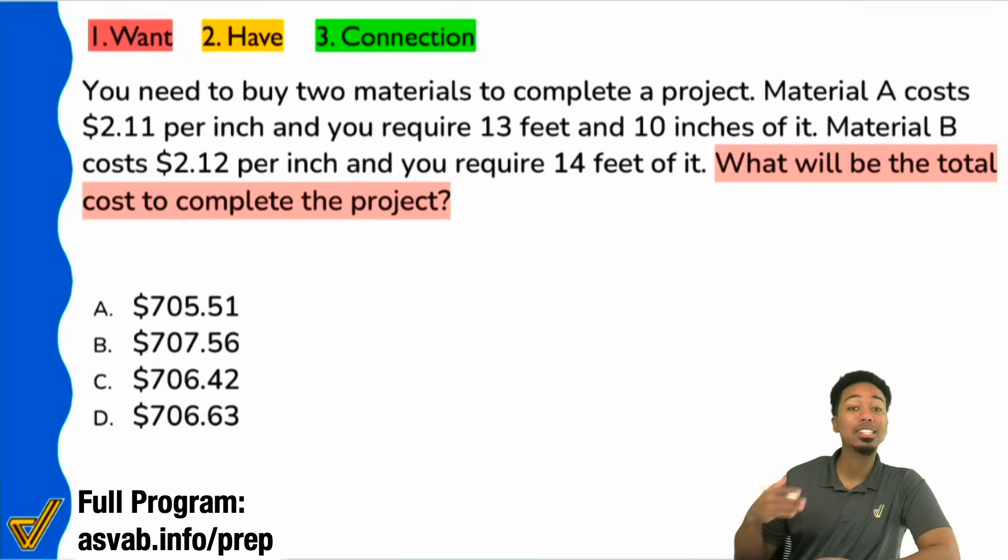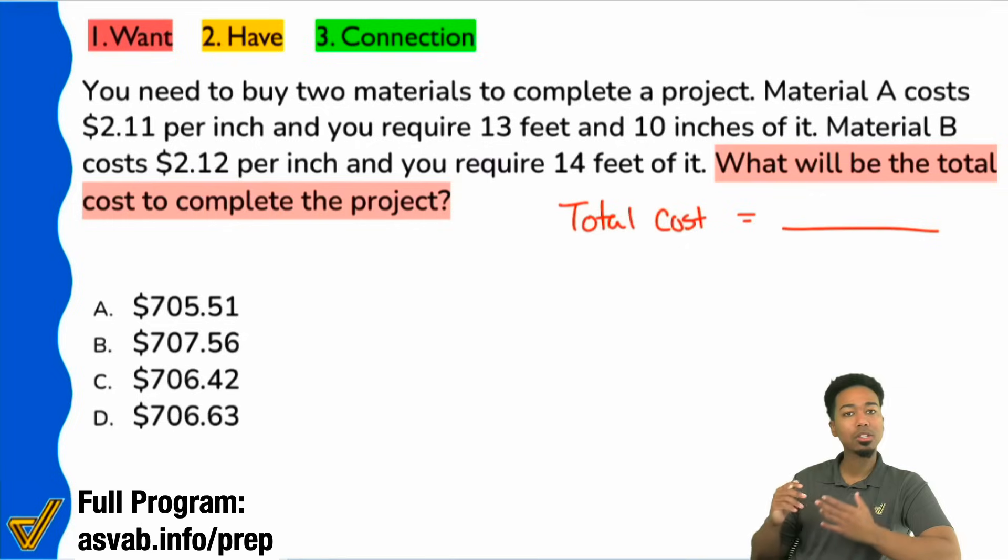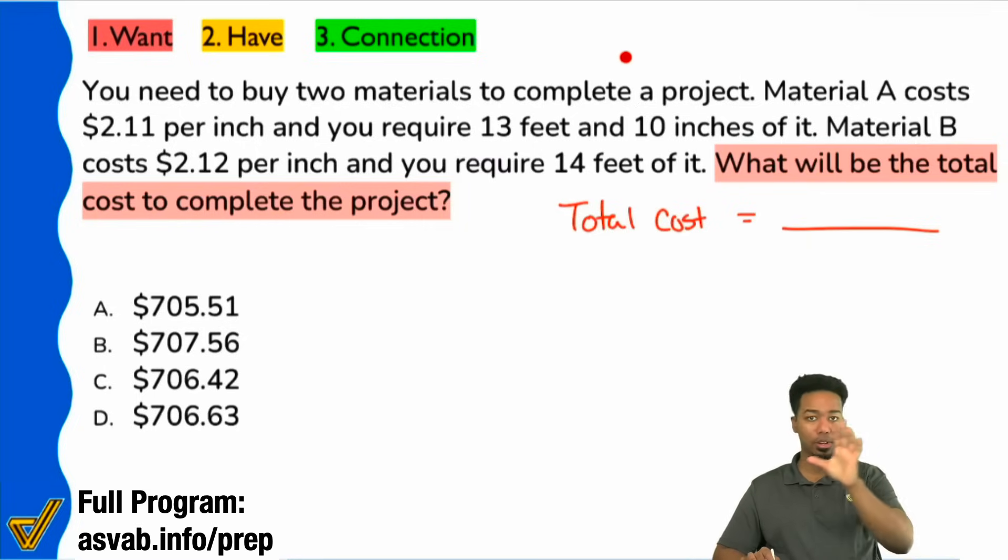Give yourself the opportunity to not freak out. We want to know the total cost of the materials equals blank. Now, the next thing that we'll do is we'll go ahead and start collecting our information. That way we can start sizing things up, seeing what potentially we need to do, what could we do, but we can't get there unless we know what the goal of the question is. We want the total cost. I see here that we're talking about buying two materials to complete a project. So it sounds like to me, we'll need to find the cost of the first material, find the cost of the second material, then maybe add them up together.